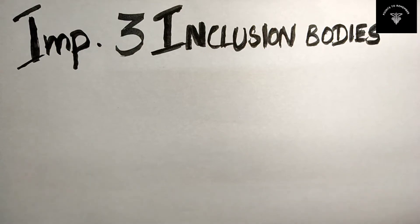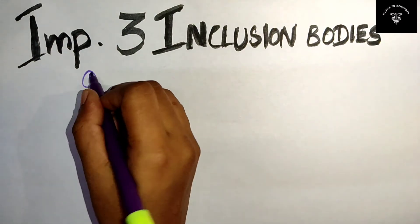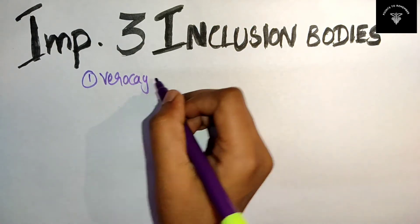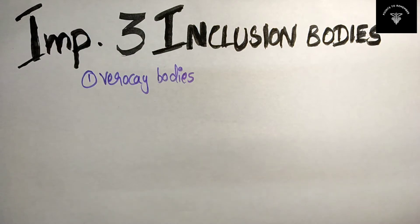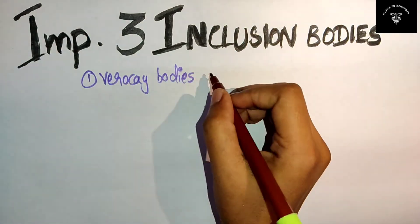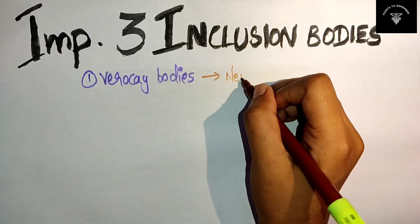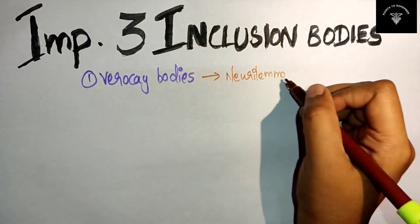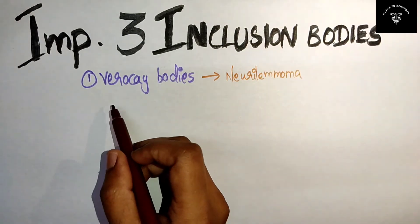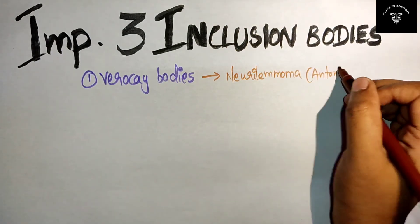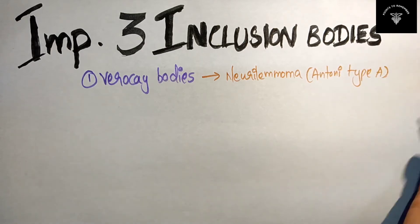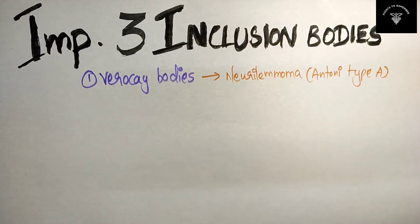The first important inclusion body will be your Verocay bodies. Where can you find Verocay bodies? You can find them in the neurilemoma, Antoni type A.